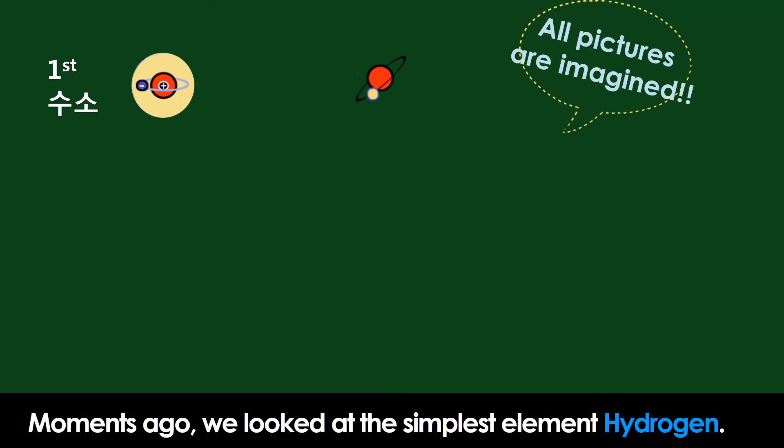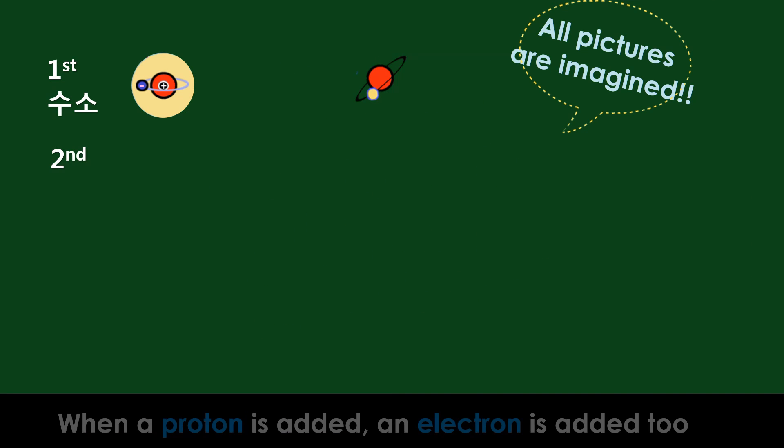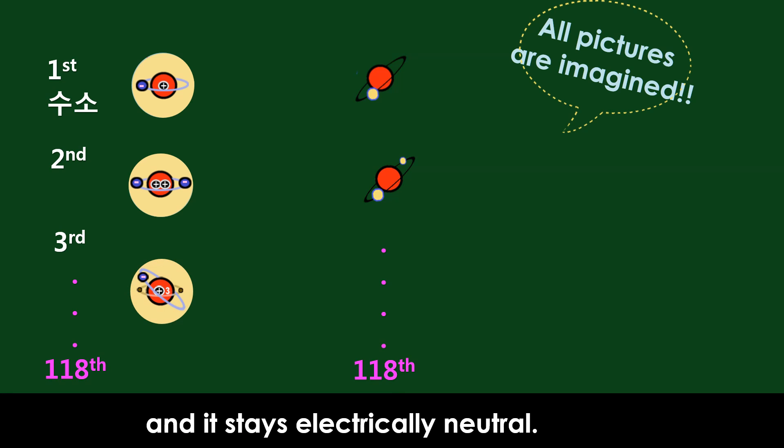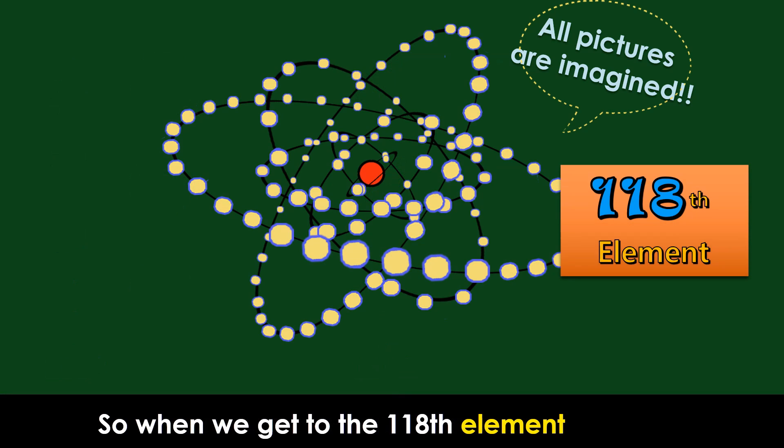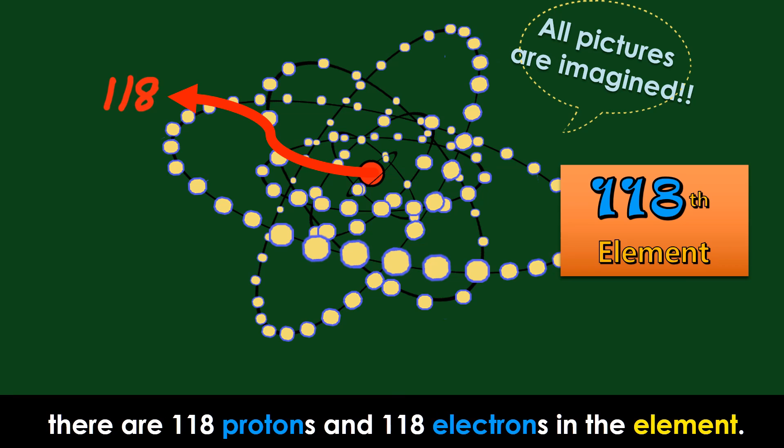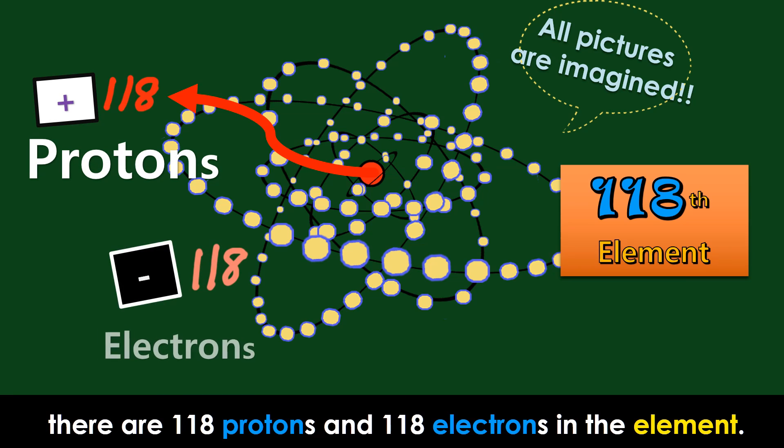Moments ago, we looked at the simplest element, hydrogen. When a proton is added, an electron is added too, and it stays electrically neutral. So when we get to the 118th element, there are 118 protons and 118 electrons in the element.